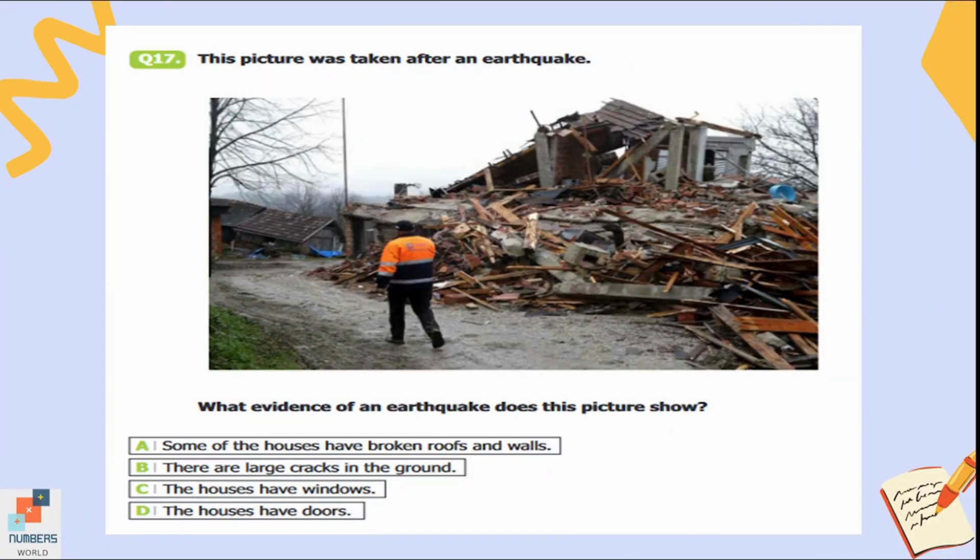Question number seventeen: This picture was taken after an earthquake. What evidence of an earthquake does this picture show? Option A: Some of the houses have broken roofs and walls. B: There are large cracks in the ground. C: The houses have windows. D: The houses have doors. Option A is the only correct answer. Some of the houses have broken roofs and walls in the given picture, so this is our evidence of the earthquake.